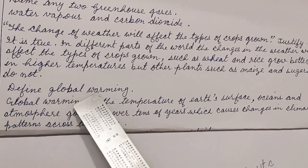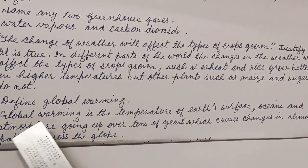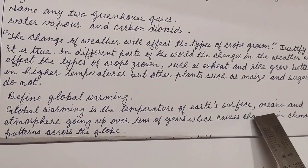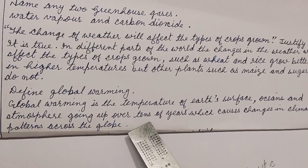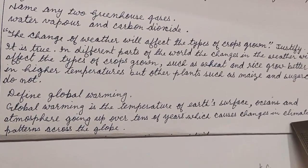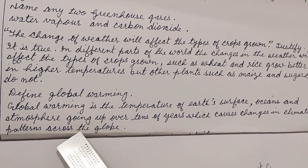Question number 12. Define global warming. Answer. Global warming is the temperature of earth's surface, oceans and atmosphere going up over tens of years, which causes changes in climate patterns across the globe.